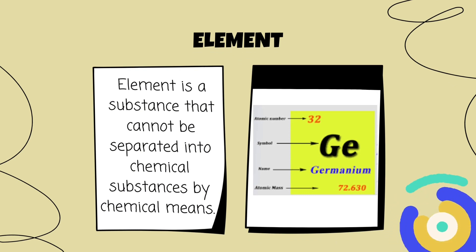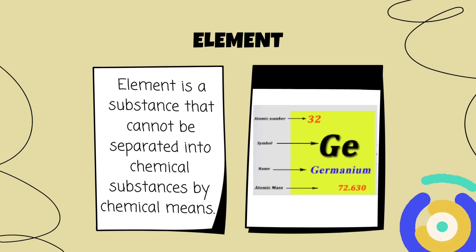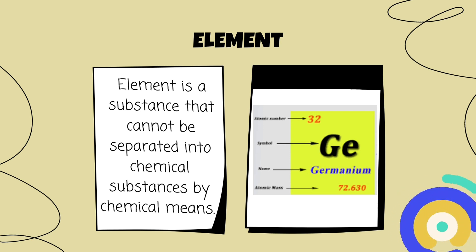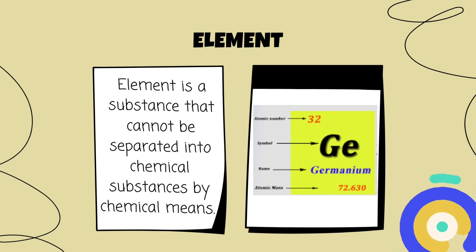An element, as mentioned, is a substance that cannot be separated into simpler chemical substances by chemical means. An element can be written as X with a superscript represented as A, which is the atomic mass of that element, and a subscript represented by Z, which is the atomic number of that element.